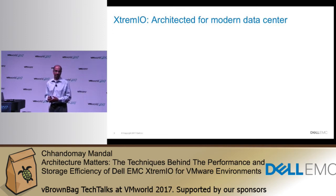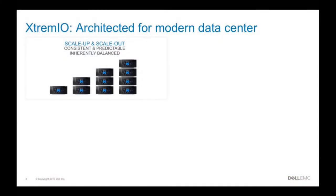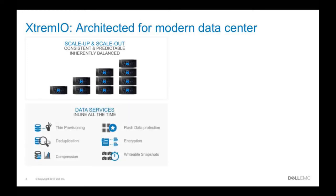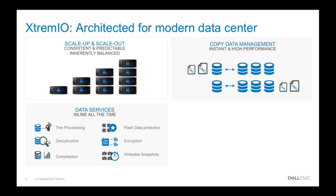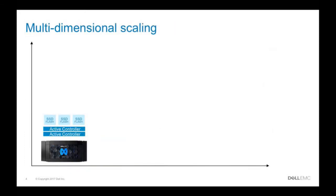There are four pillars of the XtremIO architecture. The first is scale-up and scale-out, which helps deliver consistent performance with sub-millisecond latency, inherently balancing all the load and data across the cluster all the time. The second is inline, all-the-time data services that make storage highly efficient. Third is application-integrated copy services enabling self-service workflows. The fourth is rich integrations with enterprise applications like Oracle and SQL Server, as well as VMware and other virtualized environments.